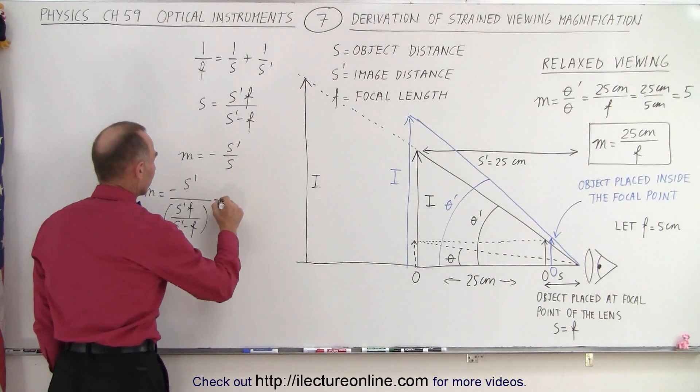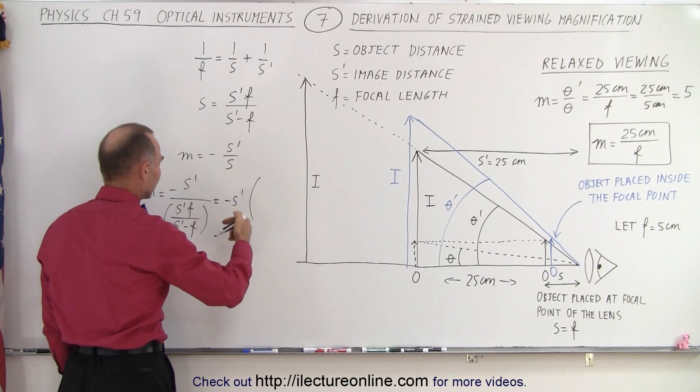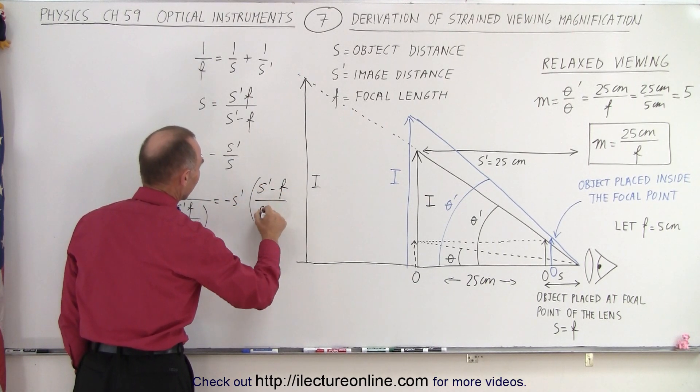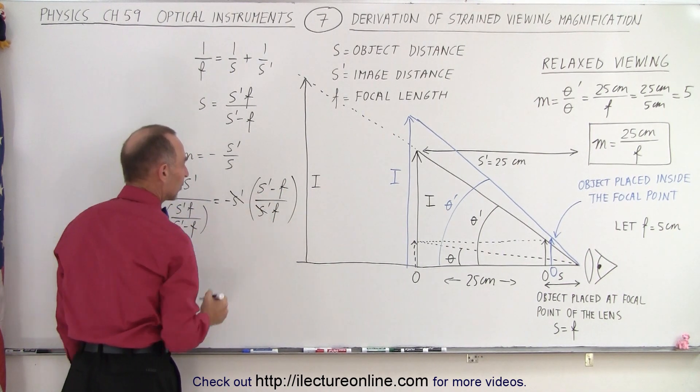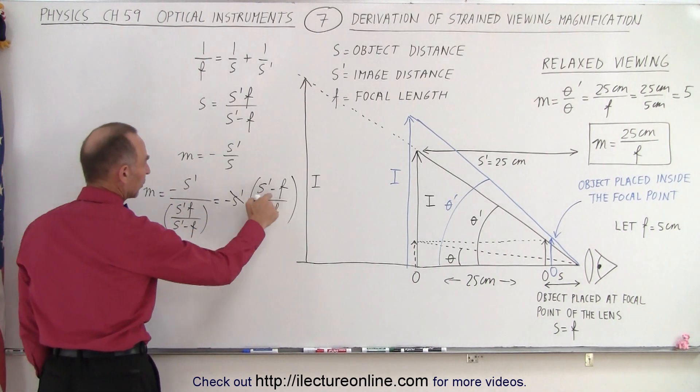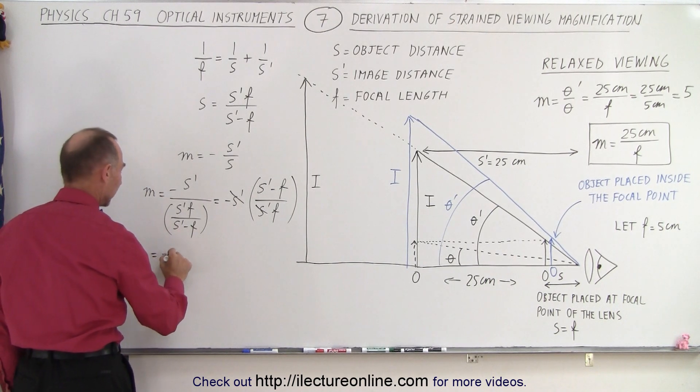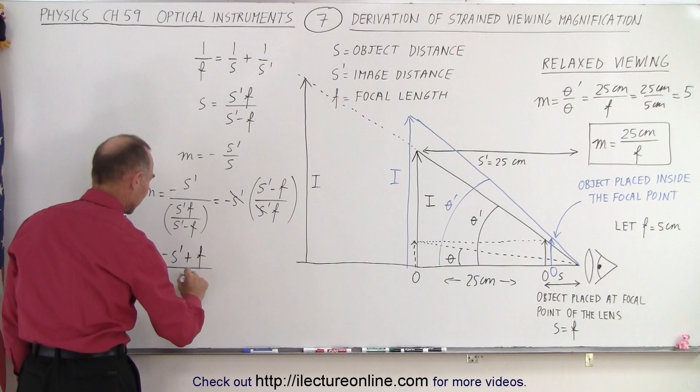So notice that can then be written as minus S prime times its inverse, which is S prime minus F divided by S prime times F, and then you can see that this S prime and this S prime cancels. So then we can multiply this through, and we get the magnification is equal to minus S prime plus F divided by F.